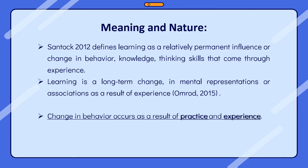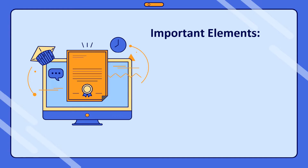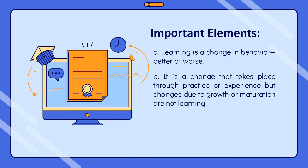This definition has three important elements. First, when we change our behavior for better or worse, it is determined that learning has occurred. Any change in behavior of the learner can be deliberate or unintentional. Next, the change takes place through practice or experience, but changes due to growth or maturation are not learning. In learning, it requires gathering information, reflecting on experiences, and putting it all into practice. Growth of a person doesn't mean growth in learning.